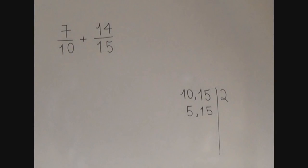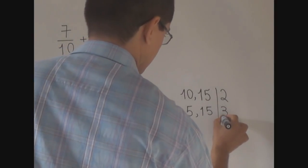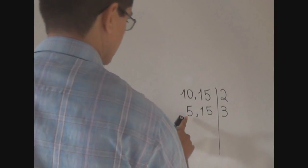Now, we have the numbers 5 and 15. Clearly, none of them are divisible by 2. But 15 is divisible by 3. That is the next prime number. What is the result of 15 divided by 3? 5.